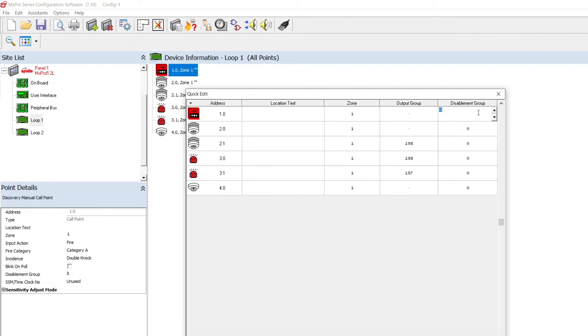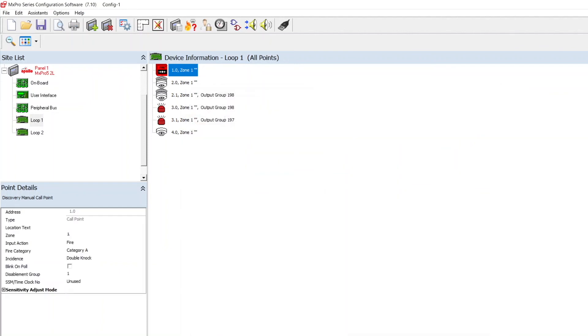For example, the manual call point can be assigned into disablement group 1 and then some specific detectors and sounders can be assigned into disablement group 2. Pressing close will exit out of the quick edit menu.